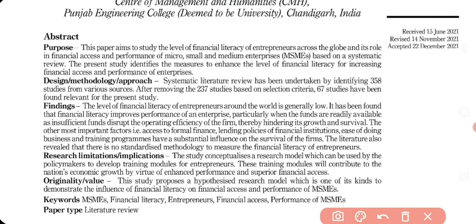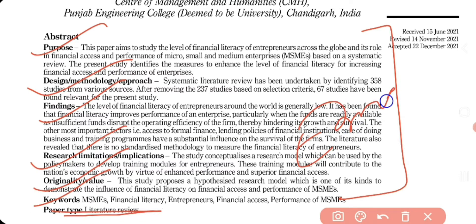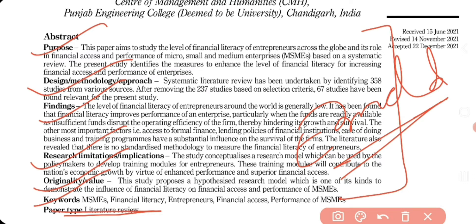I've written the abstract in a systematic way, dividing it into purpose, design, findings, research implications, originality, keywords, and type of paper. This is a requirement for every Emerald paper, so you need to check whether the journal requires a structured or unstructured abstract.